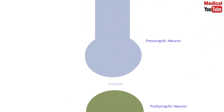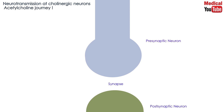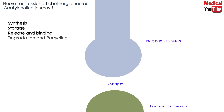Now let's discuss the neurotransmission at cholinergic neurons, or as I'm calling it, the acetylcholine journey. This journey involves synthesis of acetylcholine, storage, release and binding to receptors, degradation, and recycling of acetylcholine.